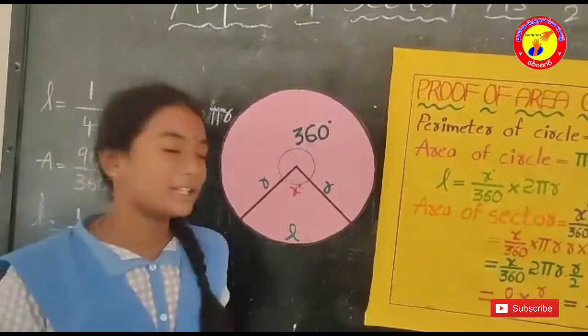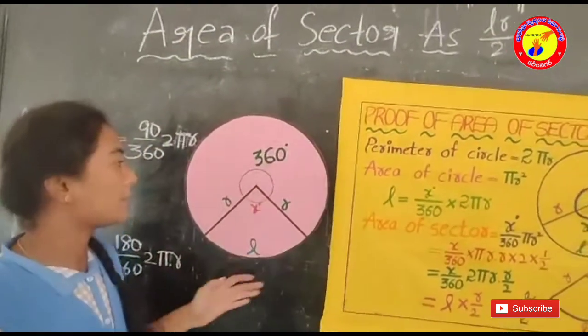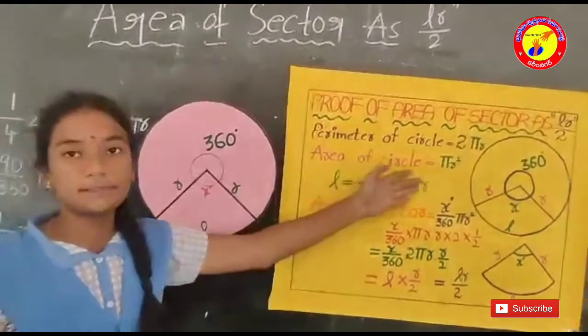Let now discuss about circle. We know that the perimeter of the circle is 2πR and area of the circle is πR square.